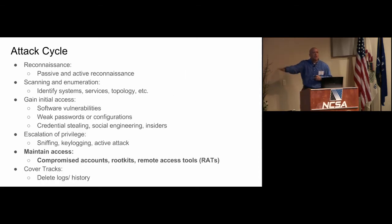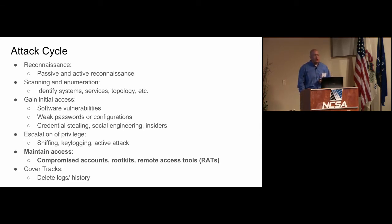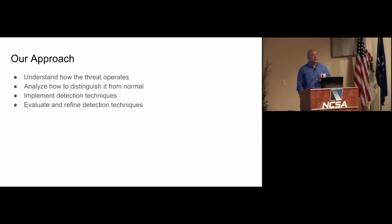A typical attack cycle for a persistent threat is sometimes called the kill chain, and specifically we're looking at the 'maintain access' portion. Our problem is: given a persistent threat that already has some level of access, and given that we cannot touch or interact with our workstations, how do we detect C2 and data exfiltration that's deliberately designed to be stealthy within normal protocols? Our approach is: first understand the human dimension of how actors use their tools in a campaign context; then generate malware samples and analyze traffic against a known-good baseline; then implement detection techniques, evaluate, and refine.